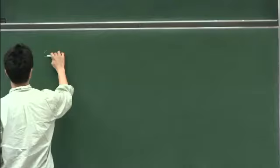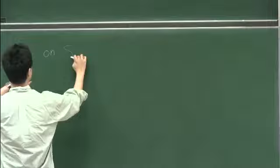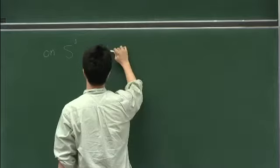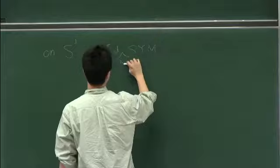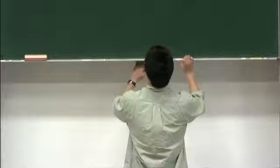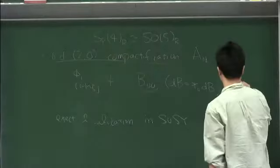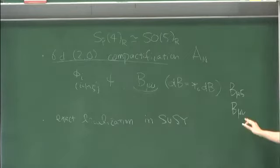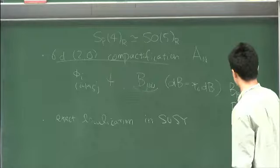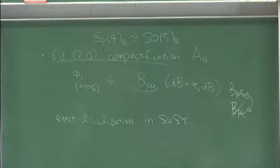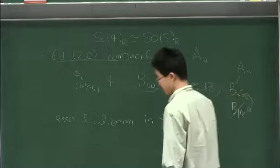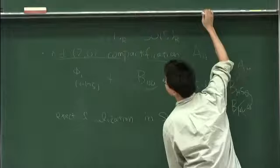Let's consider compactification on S1. By just counting supersymmetry, this gives five-dimensional maximally supersymmetric N=2 super Yang-Mills. When we do the dimensional reduction, the nasty self-dual two-form becomes — if you do the dimensional reduction — it has two parts: b_{mu 5} and b_{mu nu}, where mu, nu run from 0 to 4. But there is a self-duality constraint, so we can forget about one part. So the two-form reduces to something with one index — just a gauge field. So trivially, this reduces to five-dimensional N=2 super Yang-Mills.